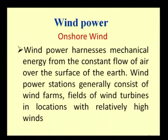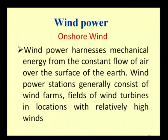Now let us discuss about wind power. Wind energy is another sort of power production agency. In warm countries or hot countries like India, a large amount of wind power can be trapped. There are two types of wind power: onshore and offshore. Wind power harnesses the mechanical energy from the constant flow of air over the surface. Wind power stations generally consist of wind farms — fields of wind turbines in locations where relatively high winds occur.